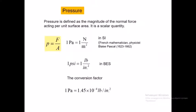Now let's define what pressure is. Pressure is defined as the magnitude of the normal force acting per unit surface area. It is a scalar quantity, denoted by the letter P. Pressure equals force divided by area. The SI unit of pressure is the Pascal — one Pascal is the pressure of one Newton of normal force acting on one square meter. Pascal is named after Blaise Pascal, the French mathematician and physicist.